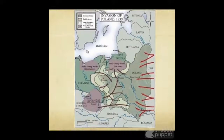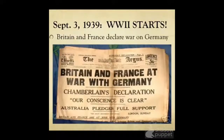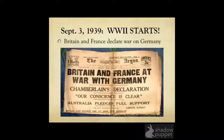Poland held out for one month but couldn't deal with both armies. Blitzkrieg was quite successful and became known as Lightning Warfare. Because of its speed and early successes, it would become a tactic used as Germany turned its eye west. On September 3, 1939, World War II officially started when Britain and France declared war on Germany to honor their promise to support Poland and because Germany had clearly broken the Munich Pact for a second time.